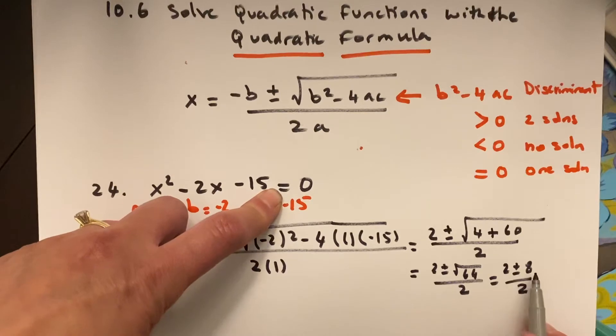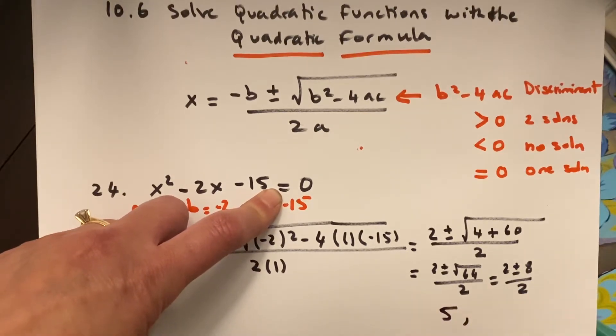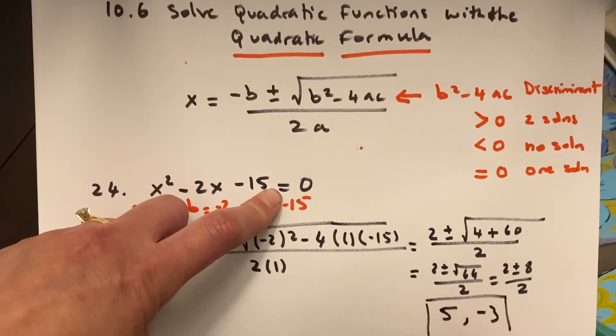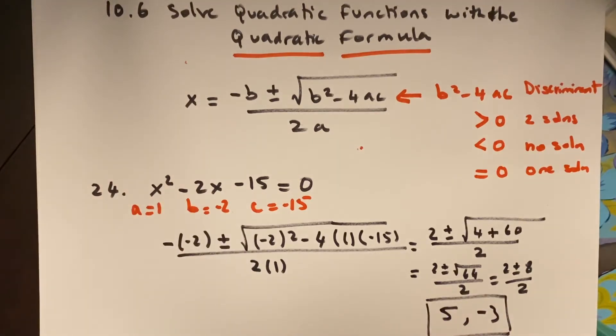2 plus 8 is 10, over 2 is 5, so one of my answers is 5. 2 minus 8 is negative 6, divided by 2 is negative 3, so these are going to be my two answers, 5 and negative 3. And so, using the quadratic formula, that was a very easy one.